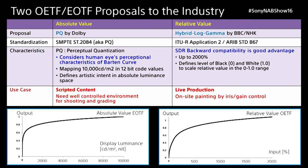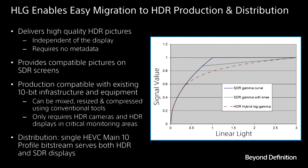PQ is an absolute curve used mostly for cinematographic applications, episodic scripted programming. It requires metadata in the production and has an incredible brightness capability — up to 10,000 nits. Hybrid log gamma is a relative curve defined to approximately 2,000 nits for television, and behaves like a television signal. It can be used in live production without the use of metadata. You can mix it, squeeze it, create special effects — it behaves like a conventional television gamma signal but with a wider dynamic range.